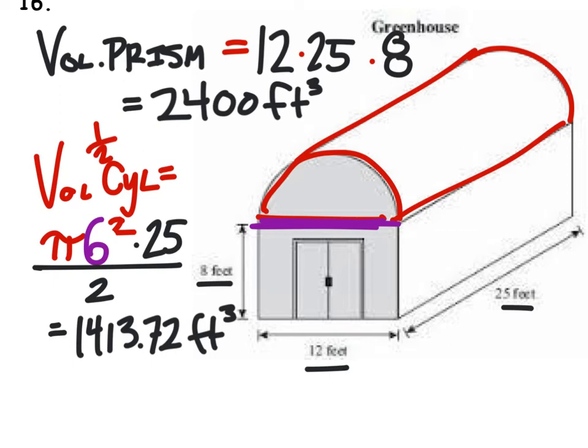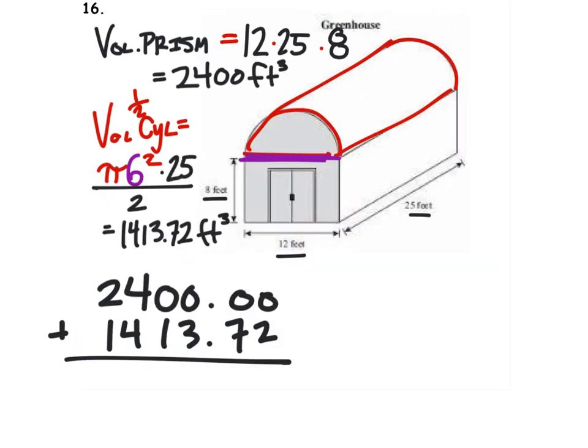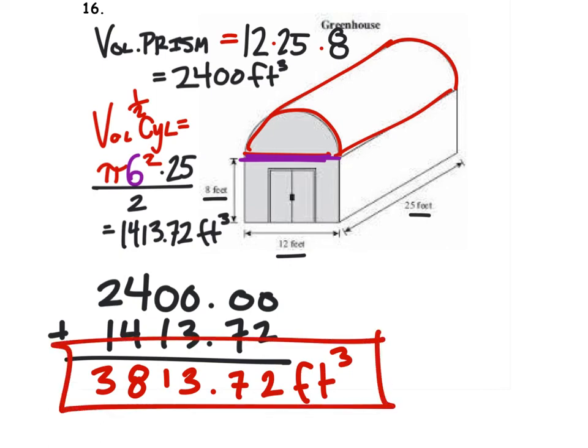So the volume of the entire thing is just meaning that we need to add both of these numbers. And now we can add these. Not that you guys would do this, you'd probably use a calculator, and that's okay. We need 3,813.72 cubic feet. That is the answer, Radhian.